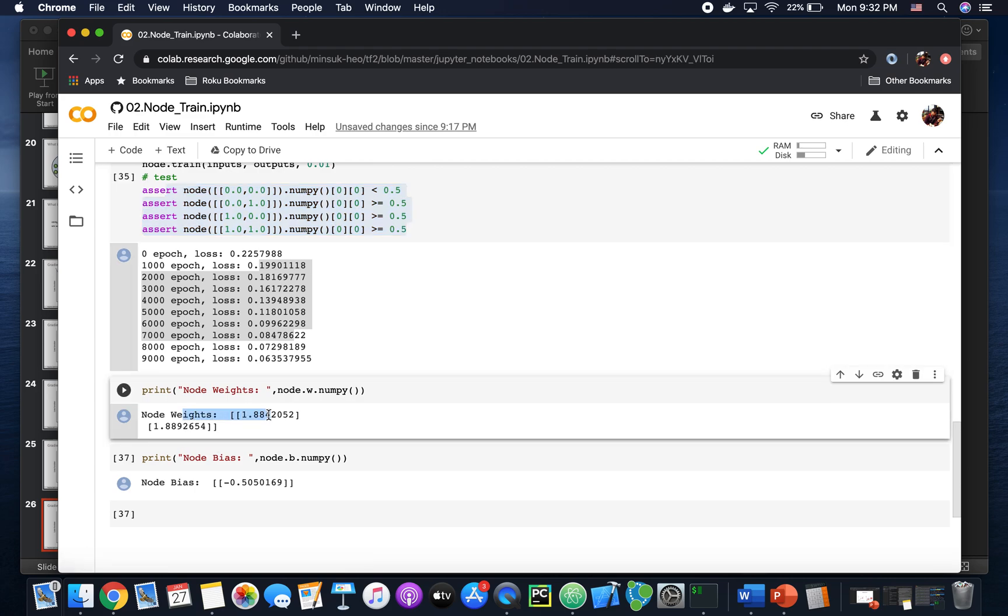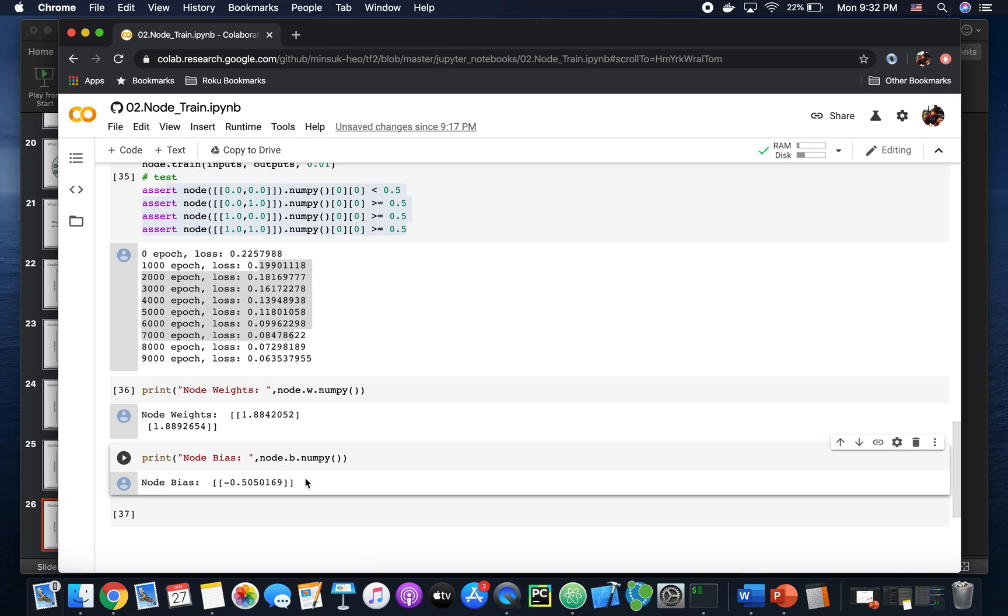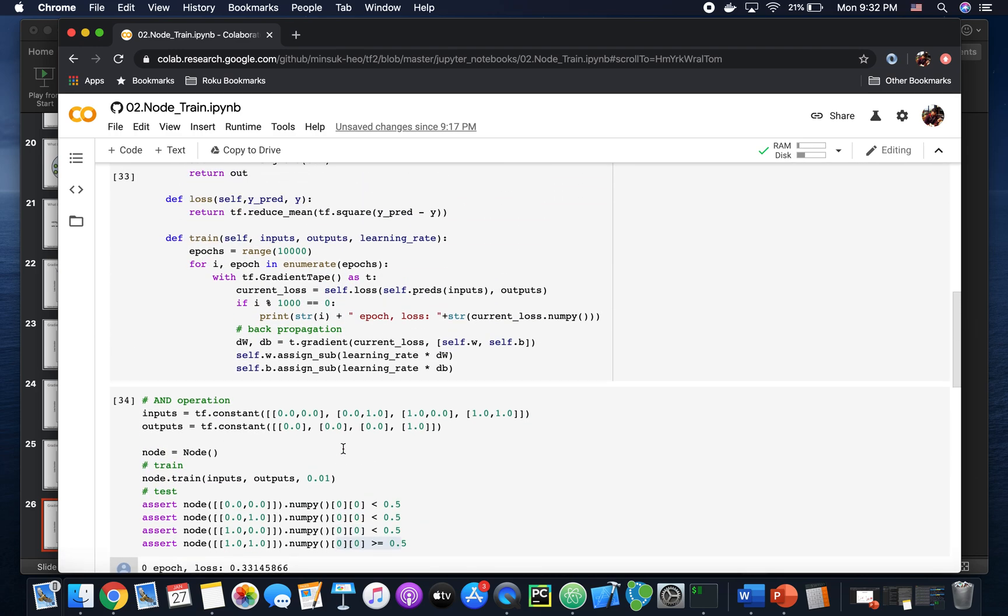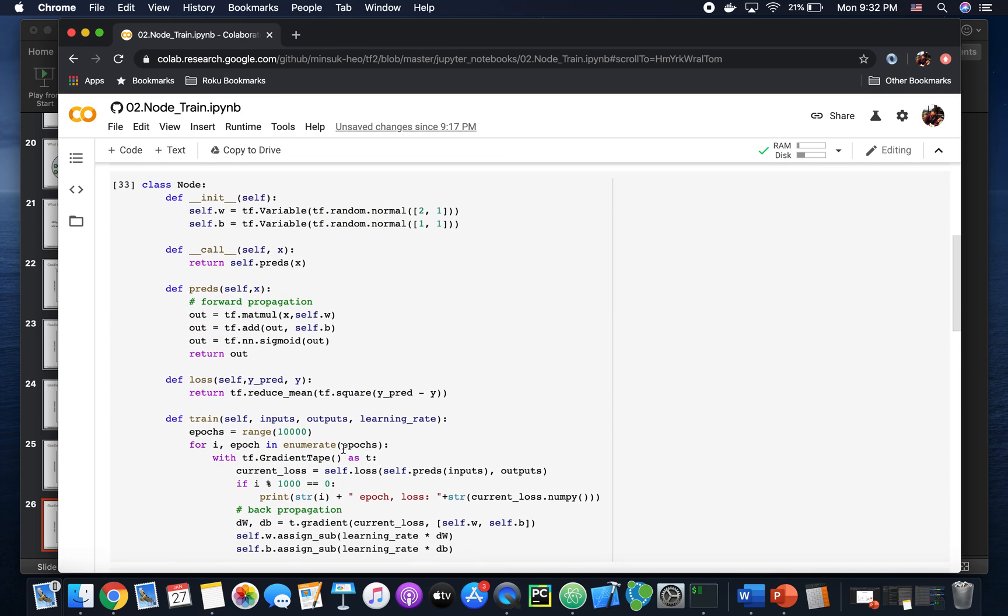Finally, you can see the weight is 1.88, 1.88 here. And the bias value is minus 0.5 here. And if you see that the node code snippet here,